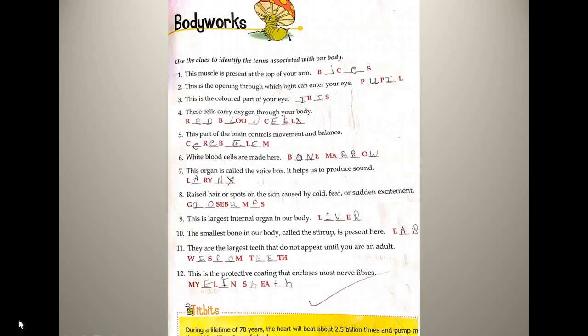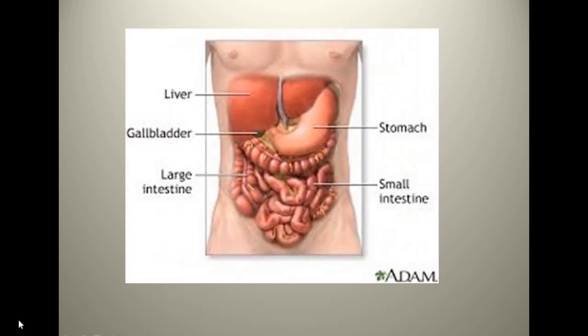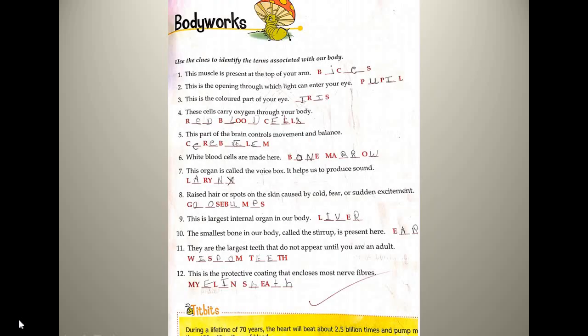The next question: this is the largest internal organ in our body. The largest internal organ in our body is liver — L-I-V-E-R. In this diagram there are different parts of the body and you can see how liver is located in your body and where it is located.